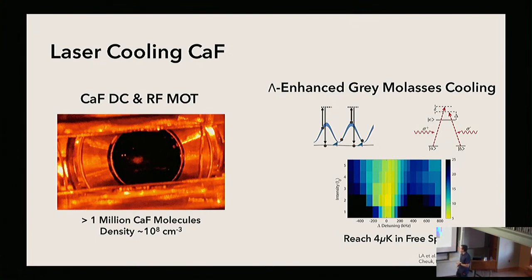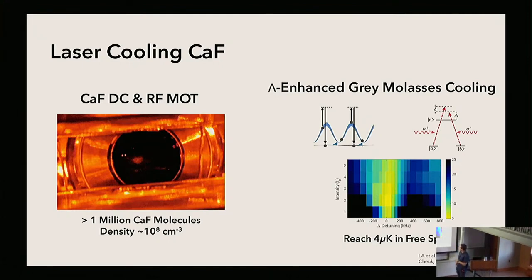For sub-Doppler cooling, we use lambda-enhanced gray molasses cooling, which combines gray molasses cooling — relying on motional recoupling from dark states into bright states — with a three-level system via CPT, or velocity-selective coherent population trapping, giving a dark state at zero velocity. When you combine both of these cooling techniques, you get a very cold temperature at zero detuning and a heating feature as you move away. We reach temperatures of about 4 microkelvin in free space doing this.